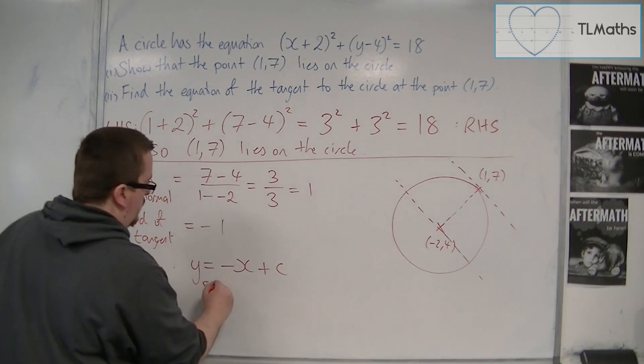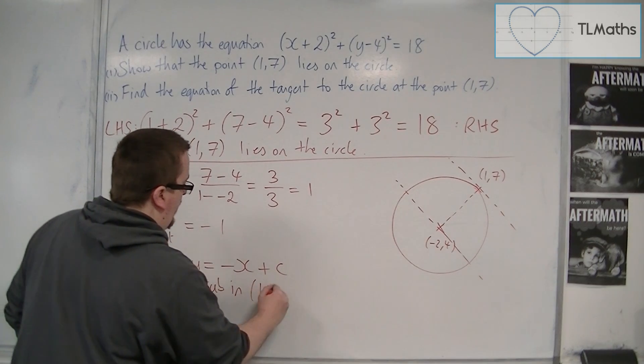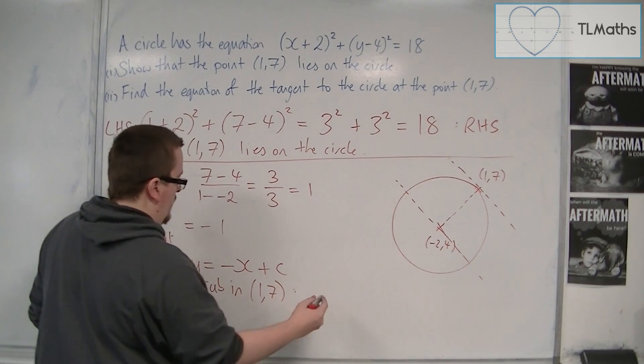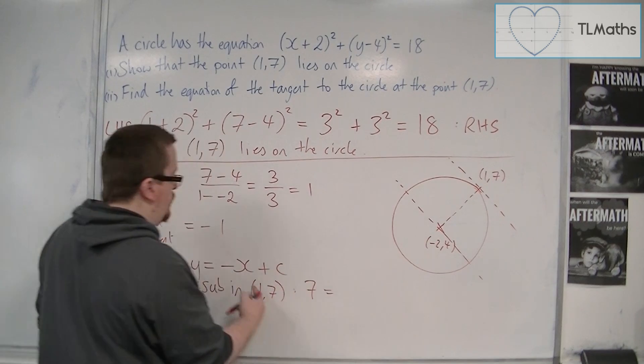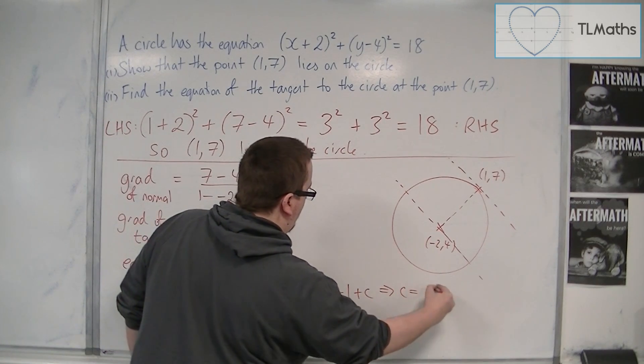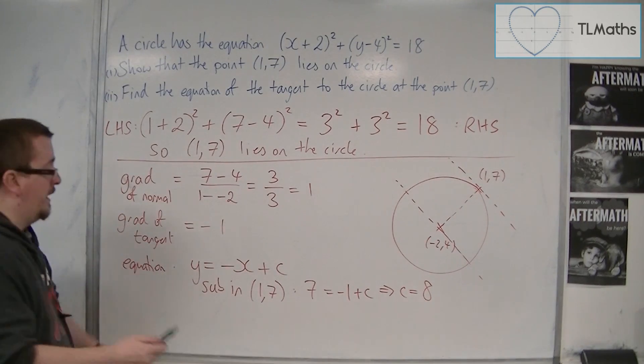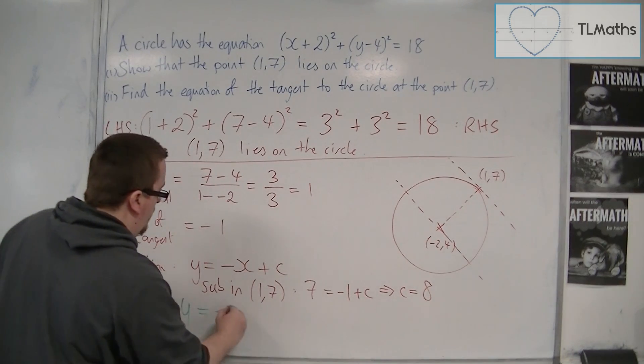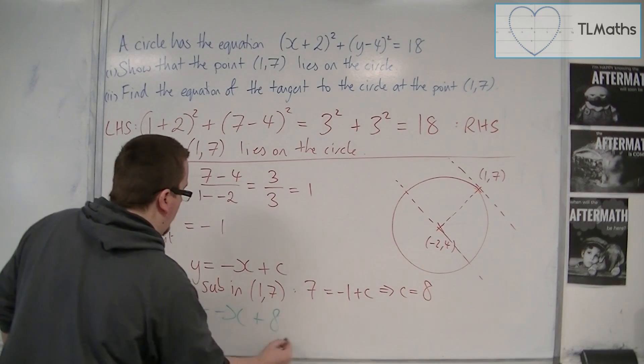So sub in (1, 7). So we're going to get 7 = -1 + c, and so c is 8. And so the equation that I'm looking for is y = -x + 8.